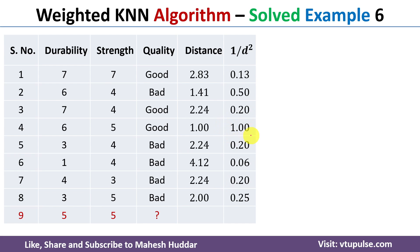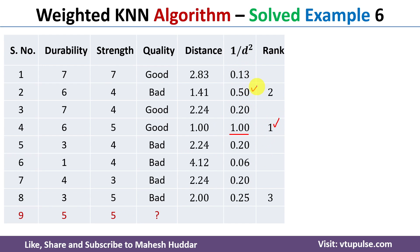The example with the maximum inverse square distance is the nearest to the new example. The maximum value is 1.00, so that example gets rank 1. The second highest is 0.50 (rank 2), and the third highest is 0.25 (rank 3).